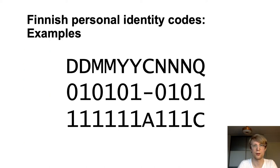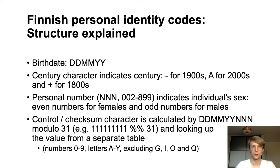Today we will concentrate on Finnish national identification numbers, and here are two imaginary examples that we will go through in the following slides. The Finnish personal identity code consists of four parts: the birthdate in short format, a century character, a personal number, and a control character.